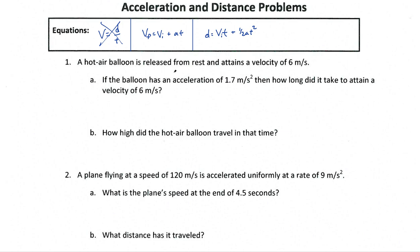Let's take a look at this first problem. Number one: we've got this hot air balloon being released from rest, and it attains a velocity of six meters per second. Being released from rest tells us it was initially on the ground and going zero meters per second. Attains a velocity of six meters per second means that is our final velocity.